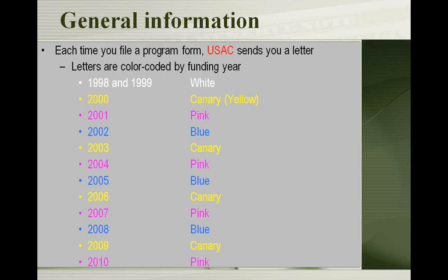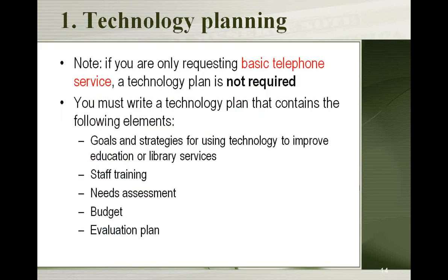There are seven basic steps in doing e-rate throughout the whole process of a year. The first step, which depends on what you are applying for, is to do some technology planning — write a technology plan. You only need a technology plan if you are applying for e-rate for your internet access. If you are only applying for e-rate for basic telephone service — your phone, long distance — and not for your internet, you do not need a technology plan.